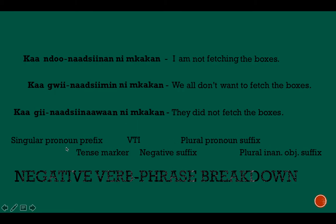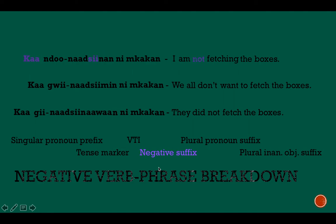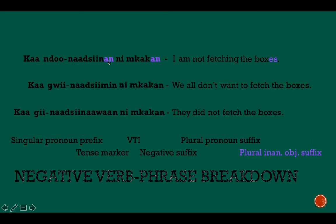Now moving to the negative version. There is a negative suffix right after the VTI word. The singular pronoun prefix is still 'Indo' — not affected in any way. There's no tense marker because the extended pronoun is in the way. The VTI word is 'nodin' meaning fetch. Then we have our negative suffix — 'ca-' and 'c-.' So we're starting negative at the beginning and ending negative right after the verb. There's no plural pronoun suffix since I is not pluralized, and the plural inanimate object suffix is 'un,' making it boxes.